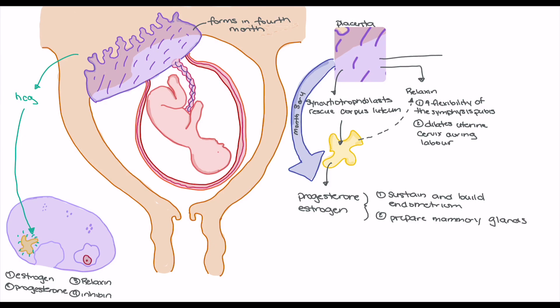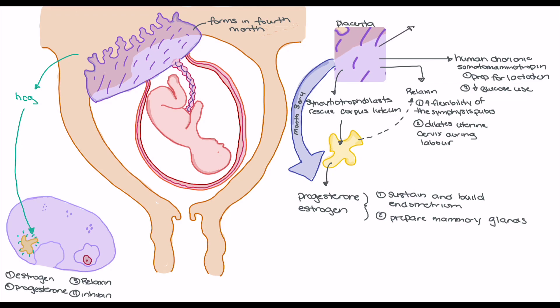The next hormone is human chorionic somatomammotropin (HCS). From the 'mammotropin' part of the name, HCS is going to help support lactation — preparing the body for milk production. Another key role of HCS is to decrease maternal glucose use. In order to make sure the fetus is getting enough glucose, maternal sensitivity to insulin goes down, allowing blood glucose levels to rise so the fetus has enough glucose for energy.